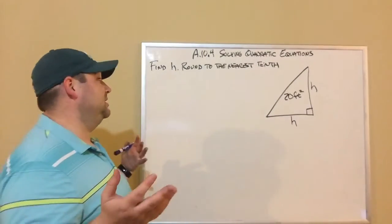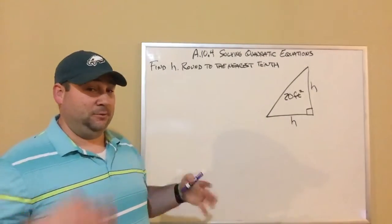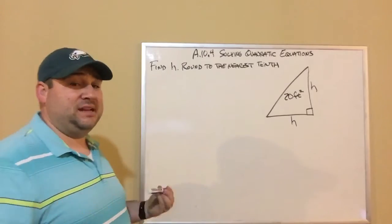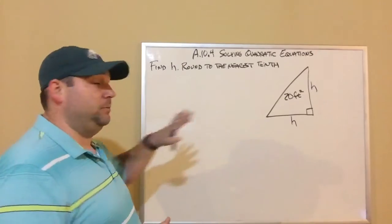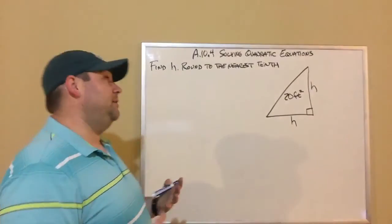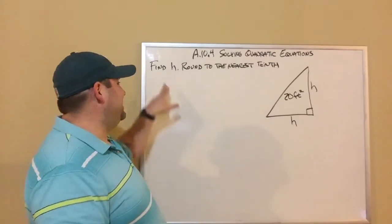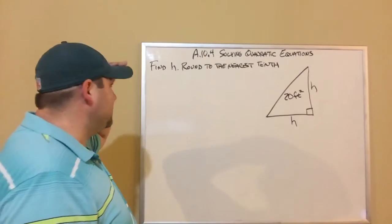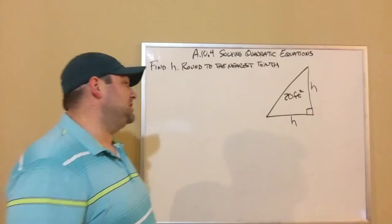All right, algebra. Let's look at example 2. I know you guys love it when we bring geometry into it. I know that's your favorite part of algebra is when we've got to combine algebra and geometry together. So we've been asked to find H and we're supposed to round to the nearest tenth.